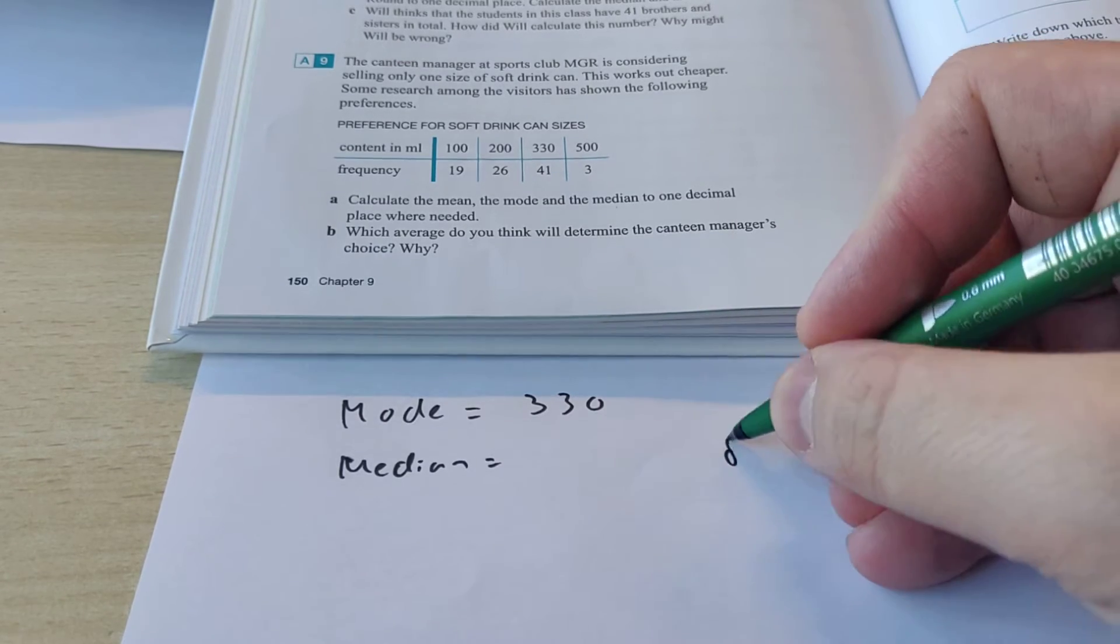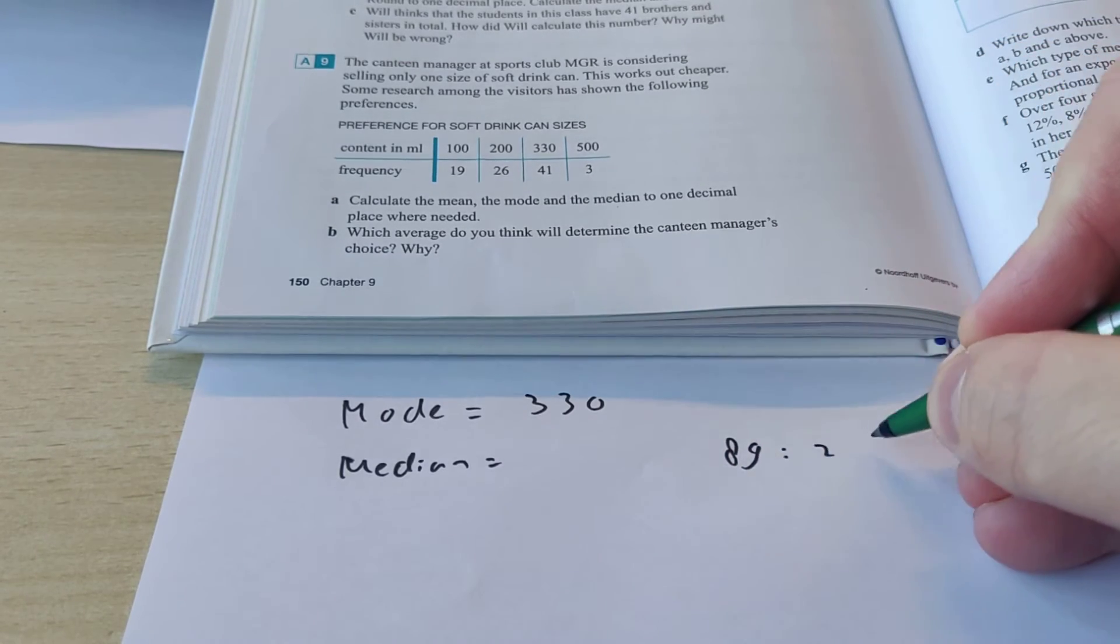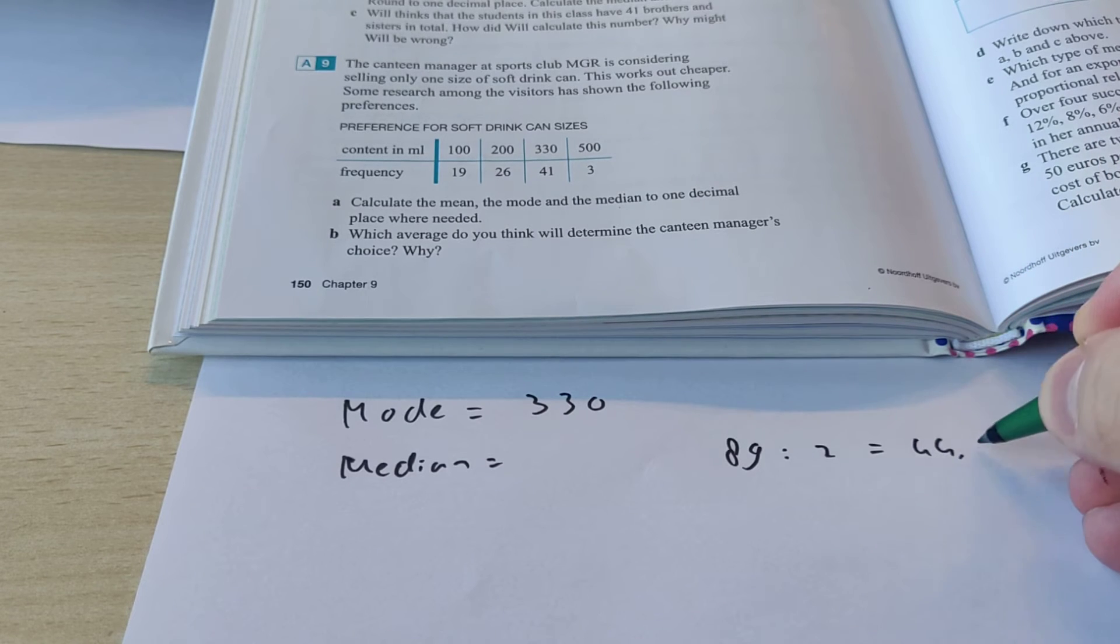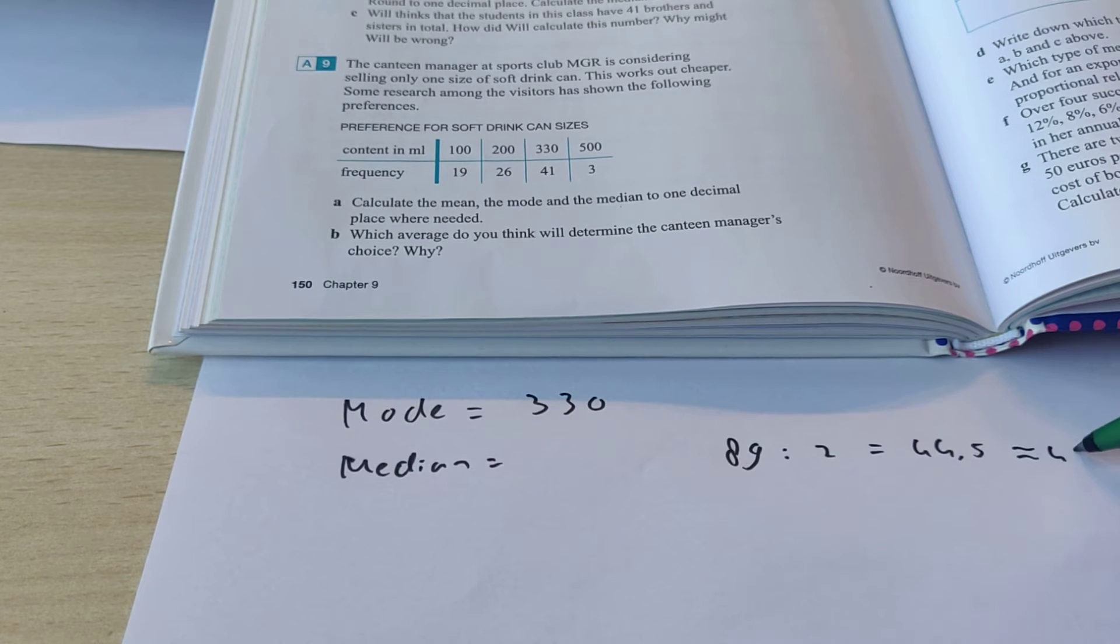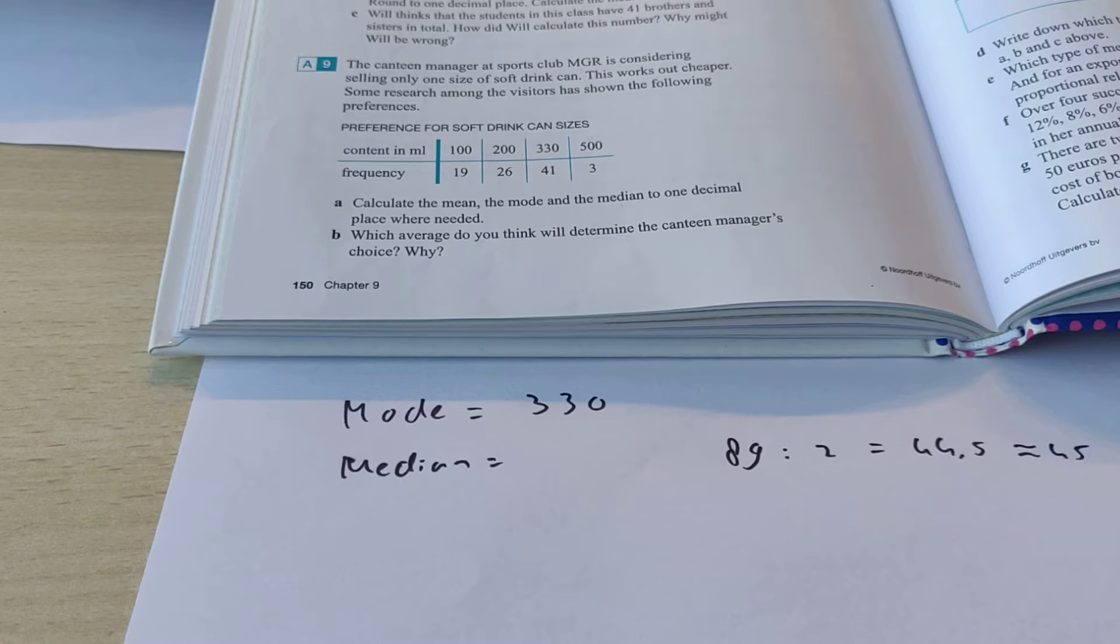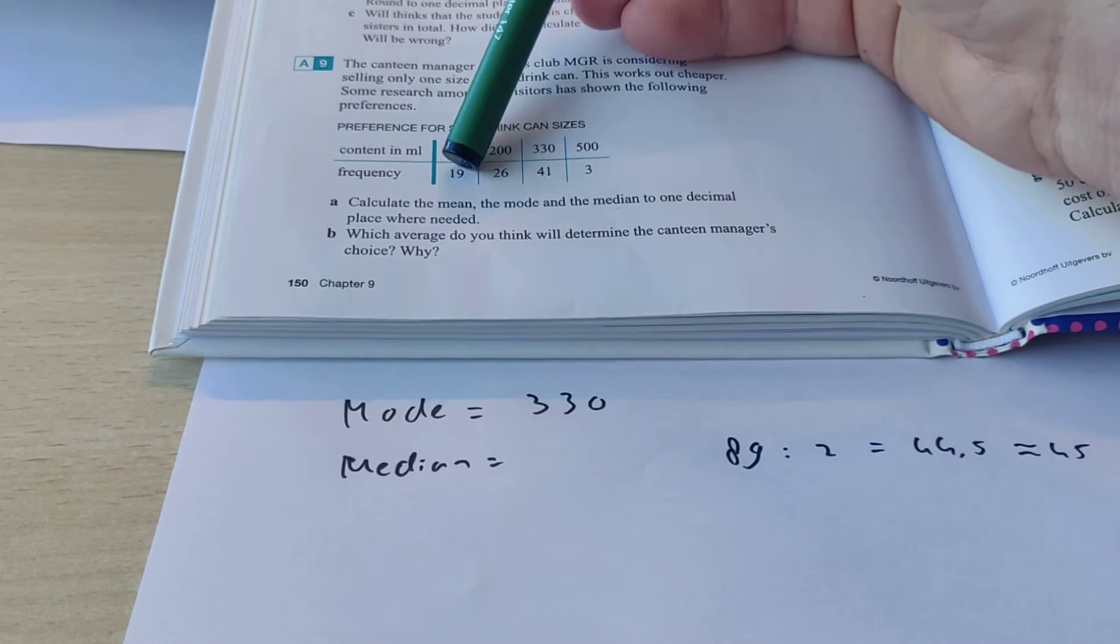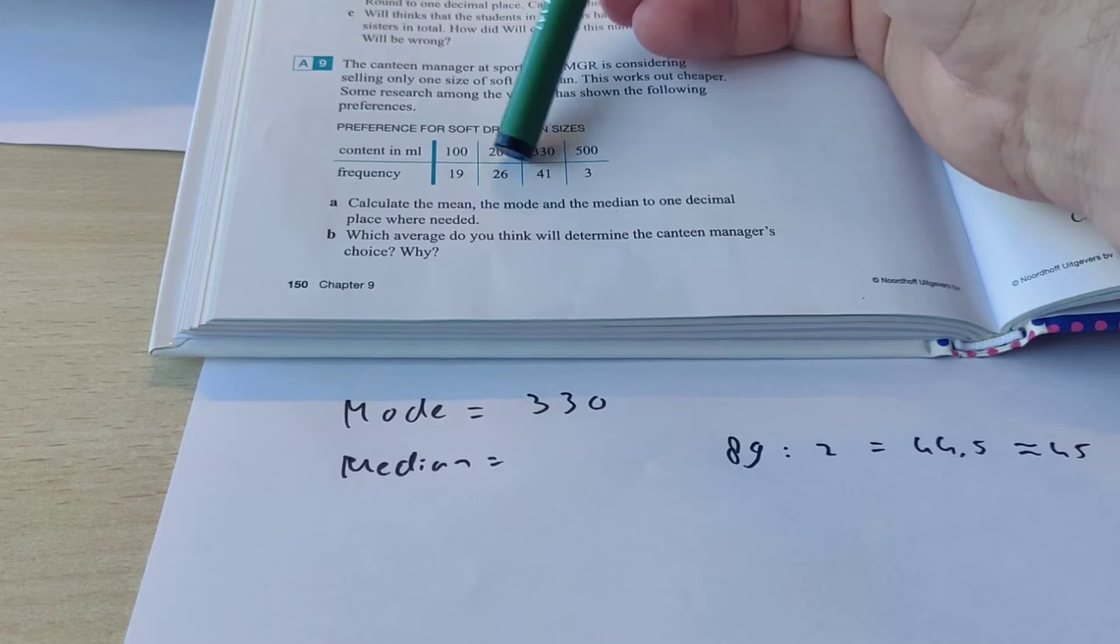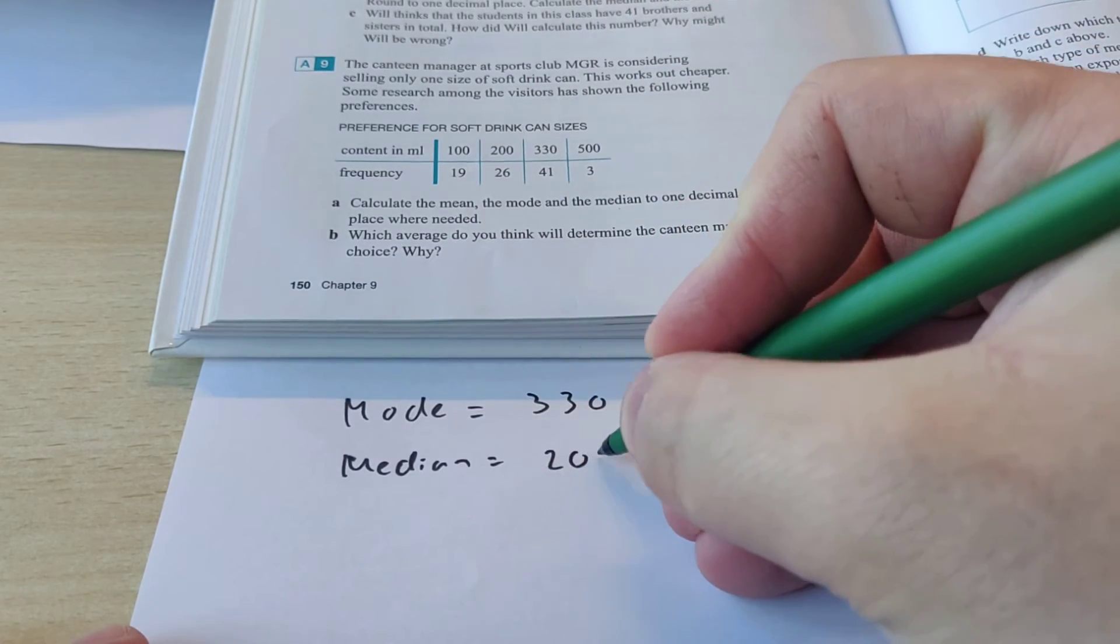89 people. So, the middle of that. If you do 89 divided by 2, you get 44 and a half. So, that means that the 45th person is their median. So, if you add this one and that one, you actually get 45. So, the median is 200.